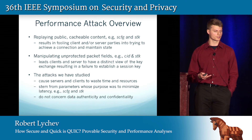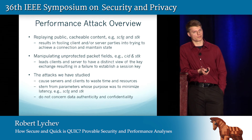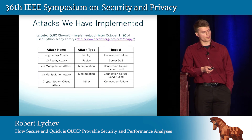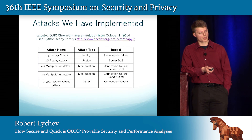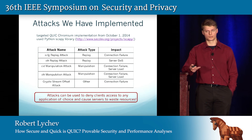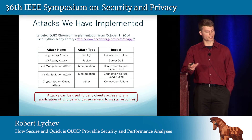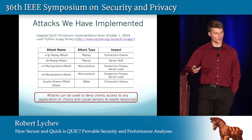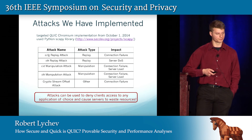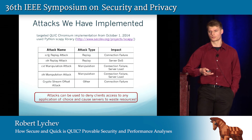Most importantly, these attacks do not concern data authenticity and confidentiality — the point is just to degrade the performance of the protocol. This is a table that summarizes all of the attacks we have implemented. We targeted the QUIC Chromium implementation from October of last year, and we implemented all of our attacks with Python's Scapy library. The main point is that these attacks can be used to deny clients access to any application of their choice, cause them to waste time and resources, and potentially also lead a server to waste resources in a denial of service attack. The reason why these attacks are interesting is that, unlike plainly dropping or delaying packets, they're actually quite subtle — they're sort of part of the protocol — and they're very hard to detect. We believe this is something that governments or organizations could potentially use for purposes of censorship.